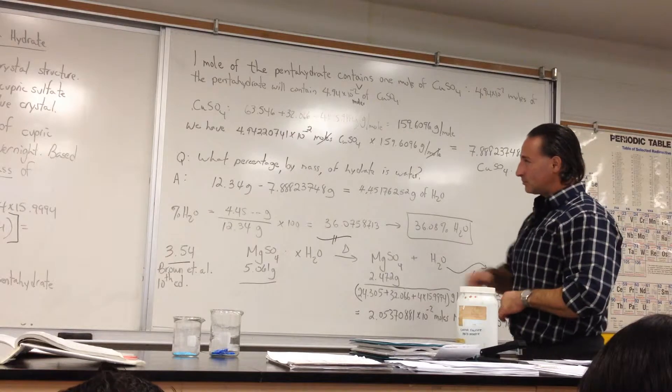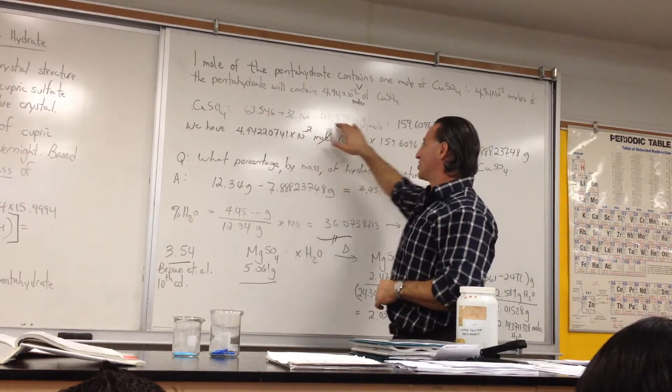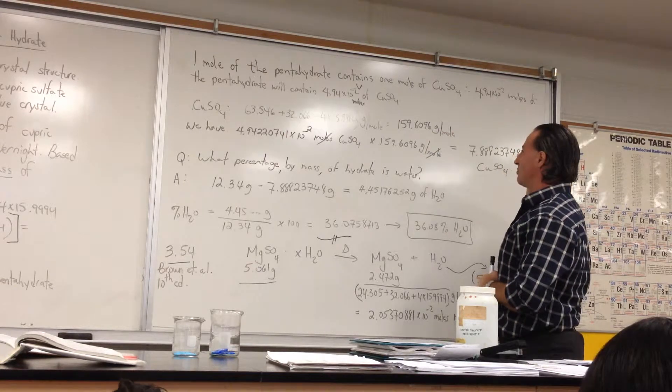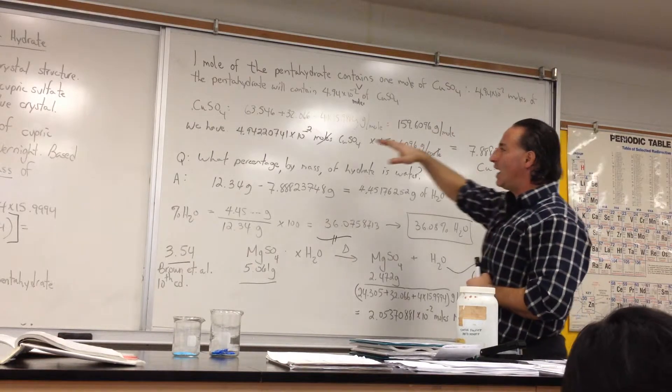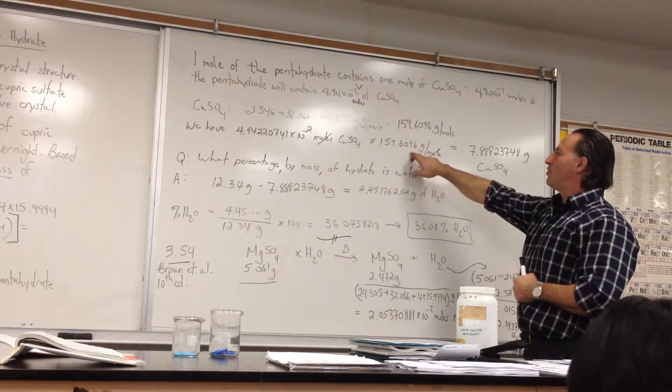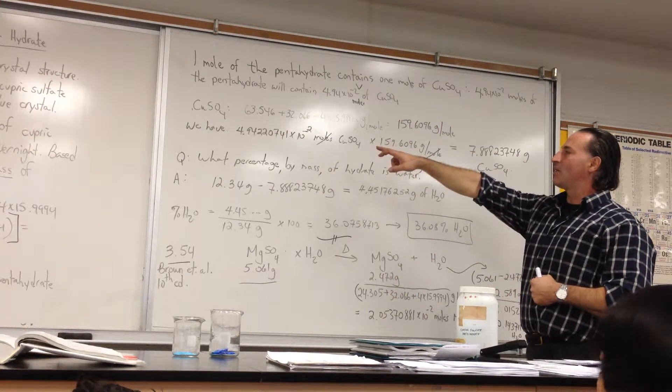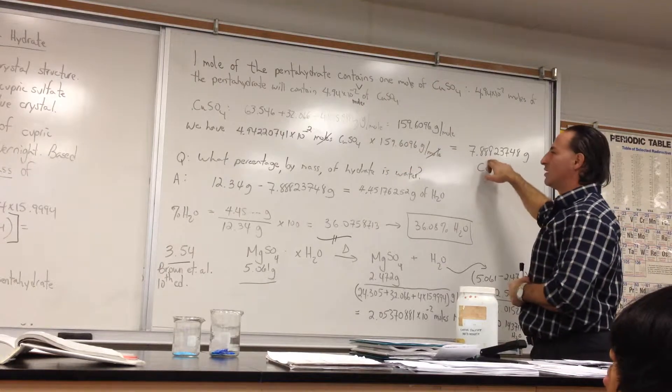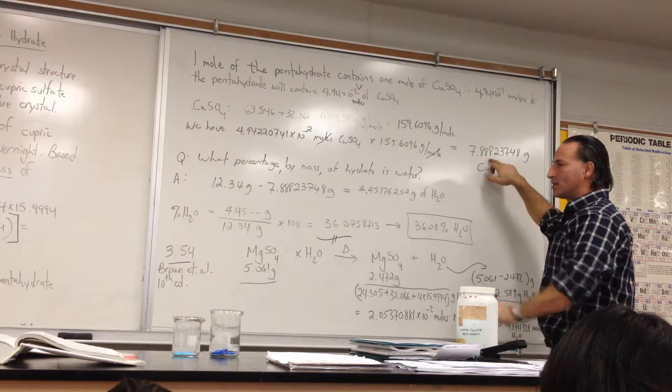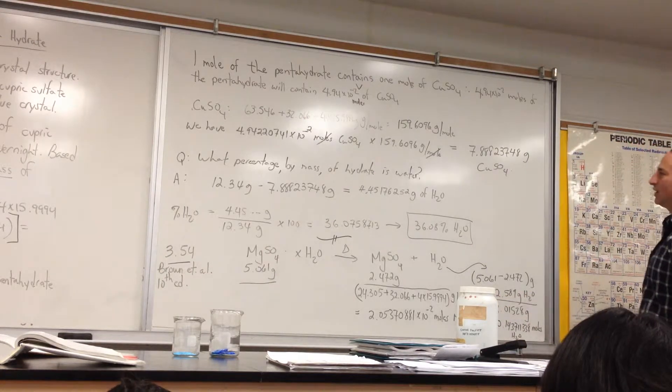So let's find out what the molar mass of pure copper sulfate is without the water. And it's 159.61 grams per mole. And we know that we have 4.94 times 10 to the minus 2 moles of copper sulfate. If we know its molar mass, and we know the number of moles, we can find out how many grams of that original 12.34 is just copper sulfate. And it turns out it's 7.88 grams.